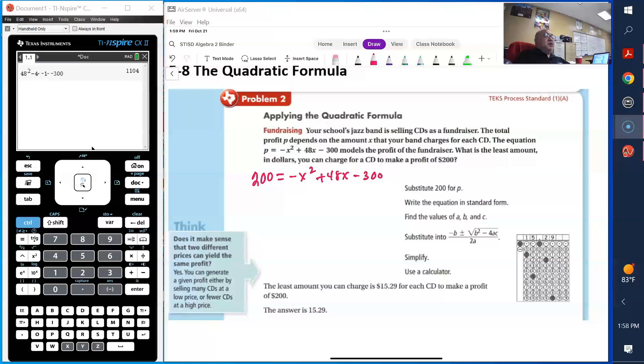So I know it's going to be 200, because that's what I want, equals negative x squared plus 48x minus 300. Remember that it has to be written in standard form. So what I'm going to do is subtract 200 from both sides. So I have 0 equals negative x squared plus 48x minus 500.